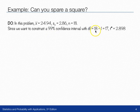So we want to construct a 99% confidence interval with 17 degrees of freedom. Sample size was 18, so there are 17 degrees of freedom. Using table B, we can find in the 99% confidence column and the 17 degree of freedom row, that T star is equal to 2.898. So now we have all the information we need for the confidence interval.